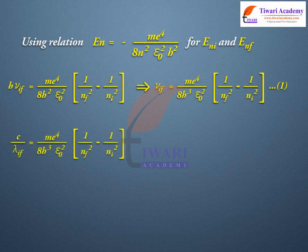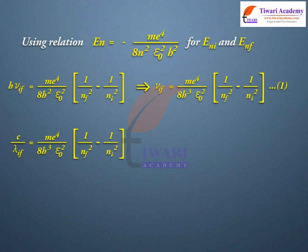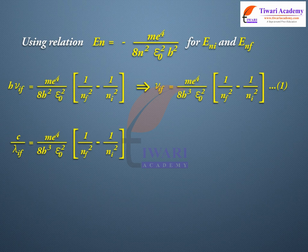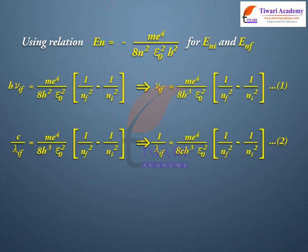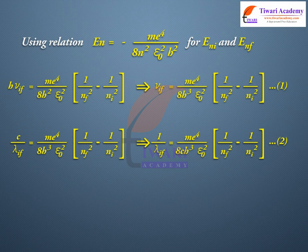c/lambda_if = (me^4)/(8h^3*ε0^2) * [1/nf^2 - 1/ni^2]. Therefore, 1/lambda_if = (me^4)/(8c*h^3*ε0^2) * [1/nf^2 - 1/ni^2], equation 2.